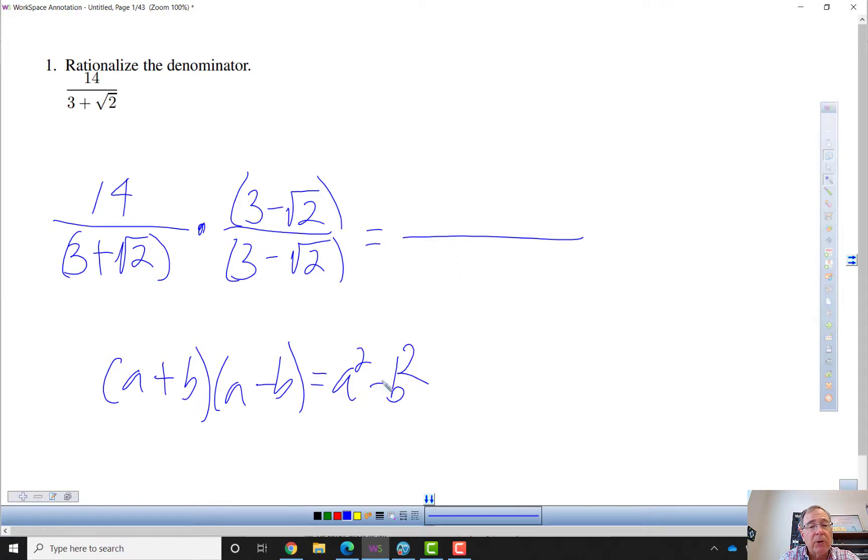then we're going to the difference of two perfect squares. So we're going to get 3 squared, which is 9, minus the square root of 2 squared, which is 2.